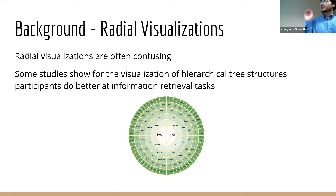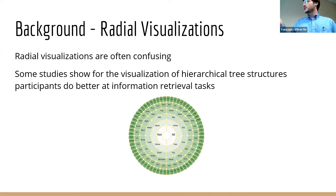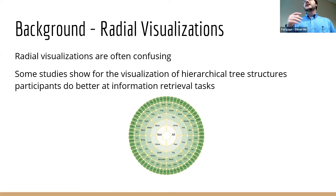Another thing I was looking at were radial visualizations. In the data visualization literature, radial visualizations are not favored — they are very hard to interpret — except for tree diagrams. When you do human interaction tests, it's easier for people to navigate radial visualizations of semantic trees for whatever reason. So I wanted to see if creating a radial visualization of an embedding would impact how people interacted with it. I converted things to polar coordinates, which added another layer of potential semantic distortion in the visualization.